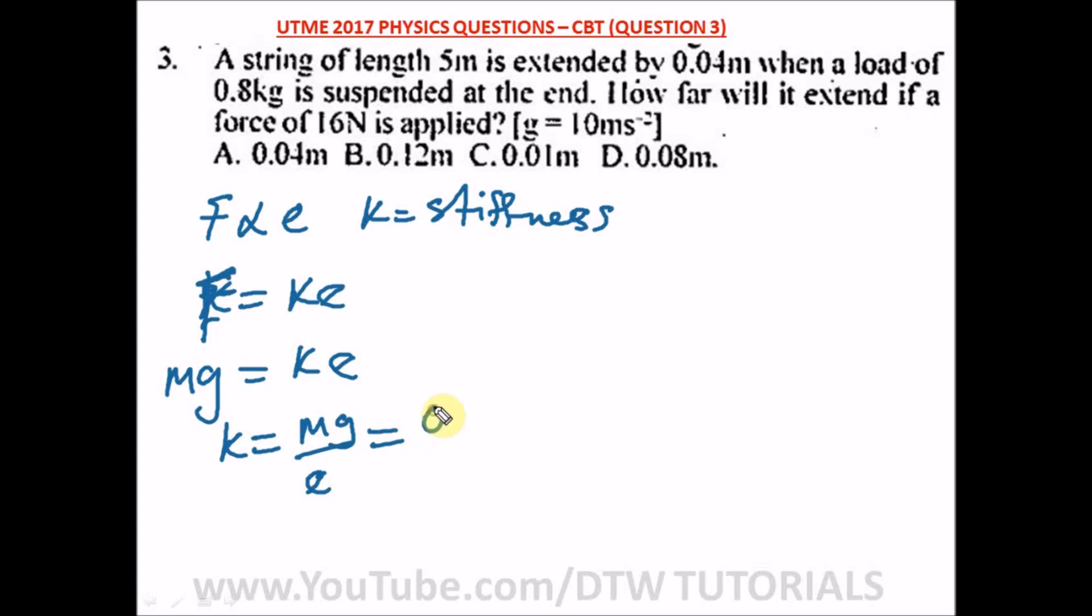And what would this give us? What is M? M is 0.8 times 10 over 0.04. So in calculating this, what do we have? Let's say we move the decimal point. You know, we have to be fast in our jam. Move it in two places. So it means we have to move here also two places. So we have 80 here, we have 4 here over 10.